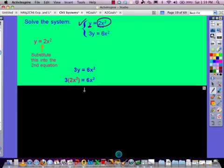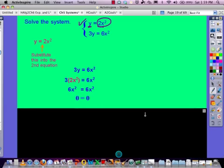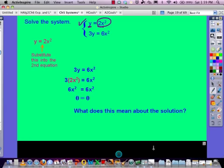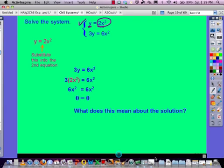So instead of a y, we would have that 2x squared go in and replace it. We would go ahead and multiply and we get 6x squared equals 6x squared which means 0. Now, I have a question here that says, well, what does that mean about our solution?